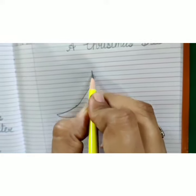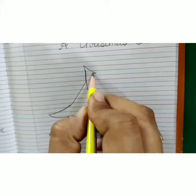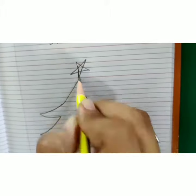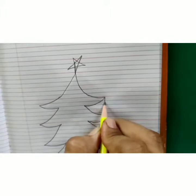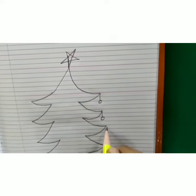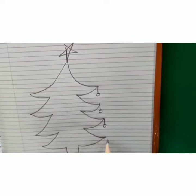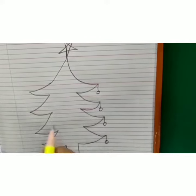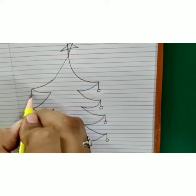Now at the top draw a big star like this. And here we will draw standing line, then small circle, standing line, small circle. On this side also we will do like this.